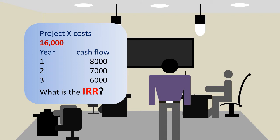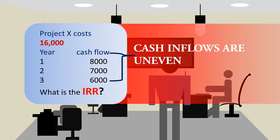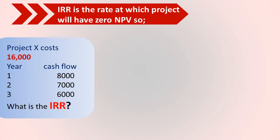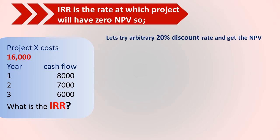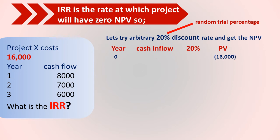How do you get the IRR? In this question the cash inflows are uneven, and the truth is that IRR will be found by trial and error. We know that IRR is the rate at which the project will have a zero NPV. So first, we try an arbitrary 20% discount rate and get the NPV — this is just a random trial percentage, you can pick any number. So we have the year, the cash inflow, the 20% discount factor, and the present value.